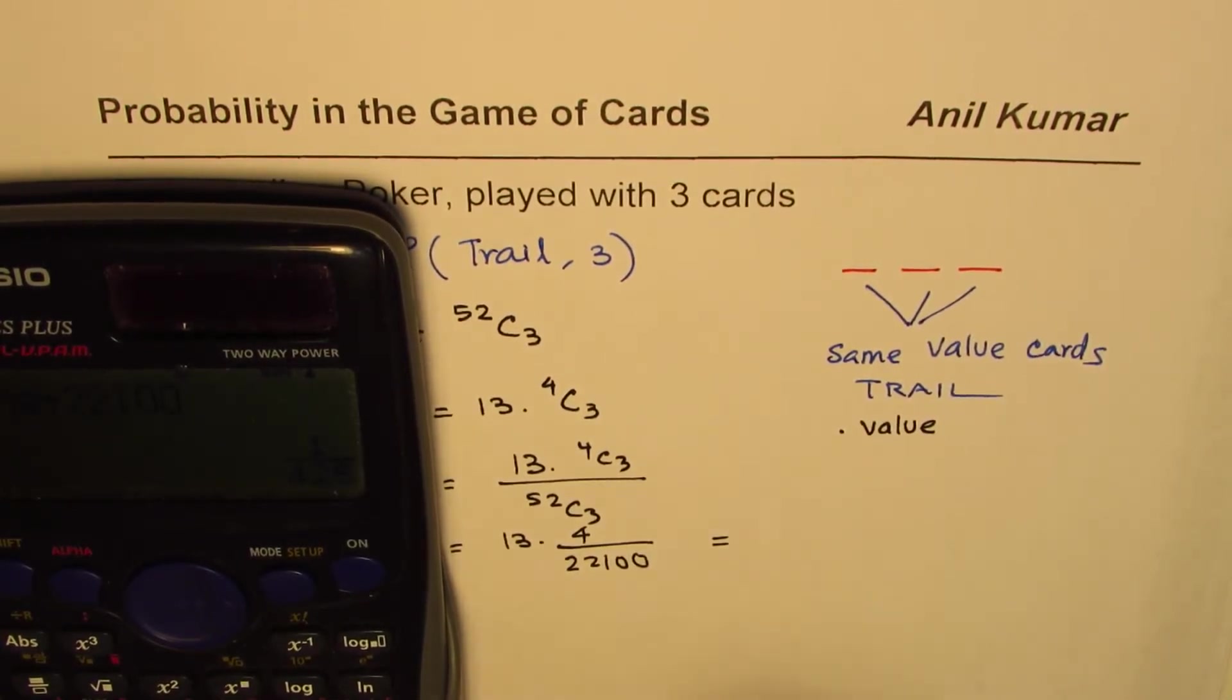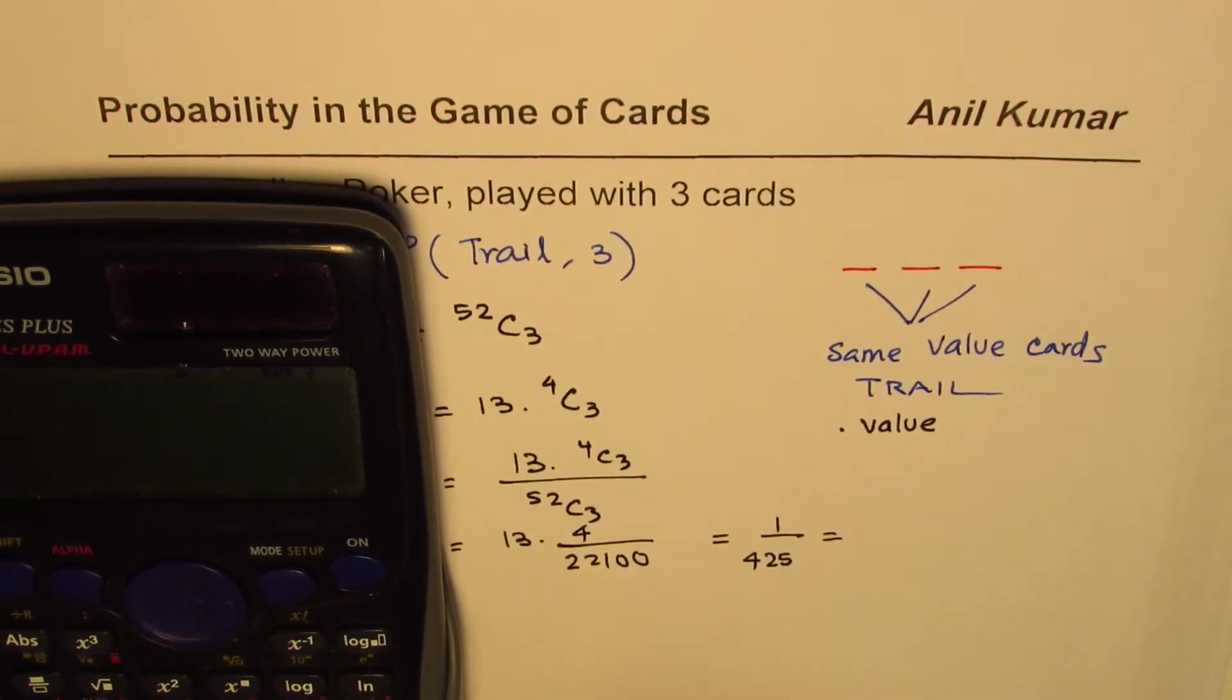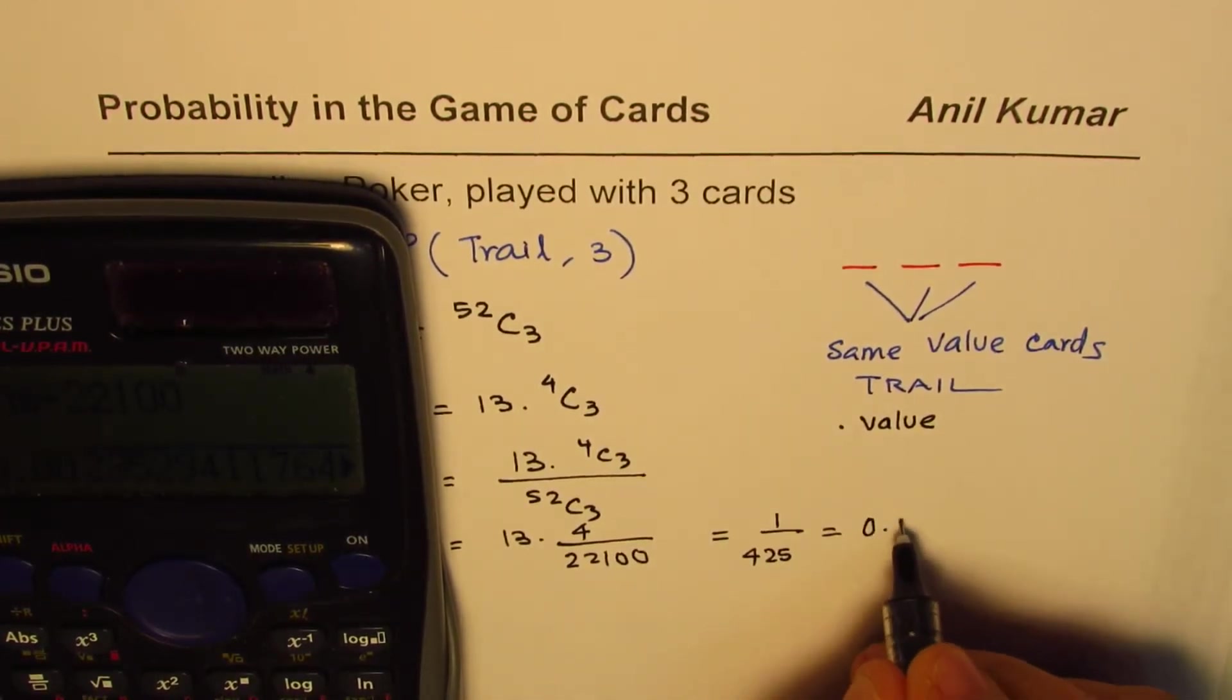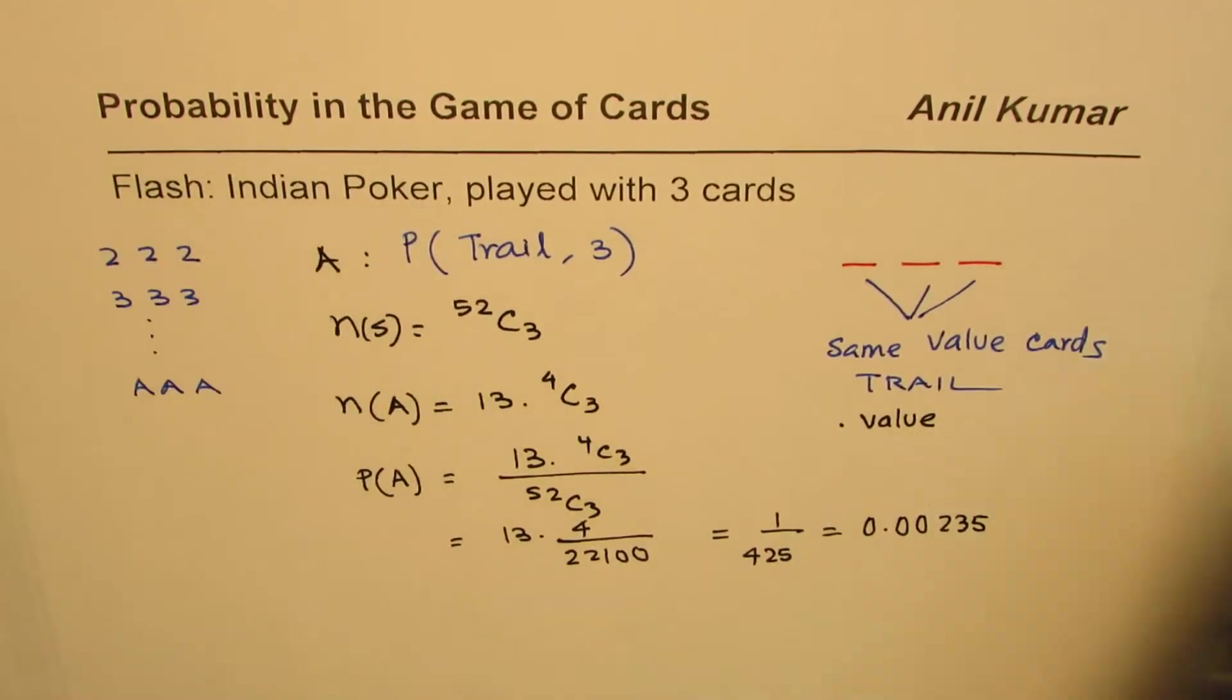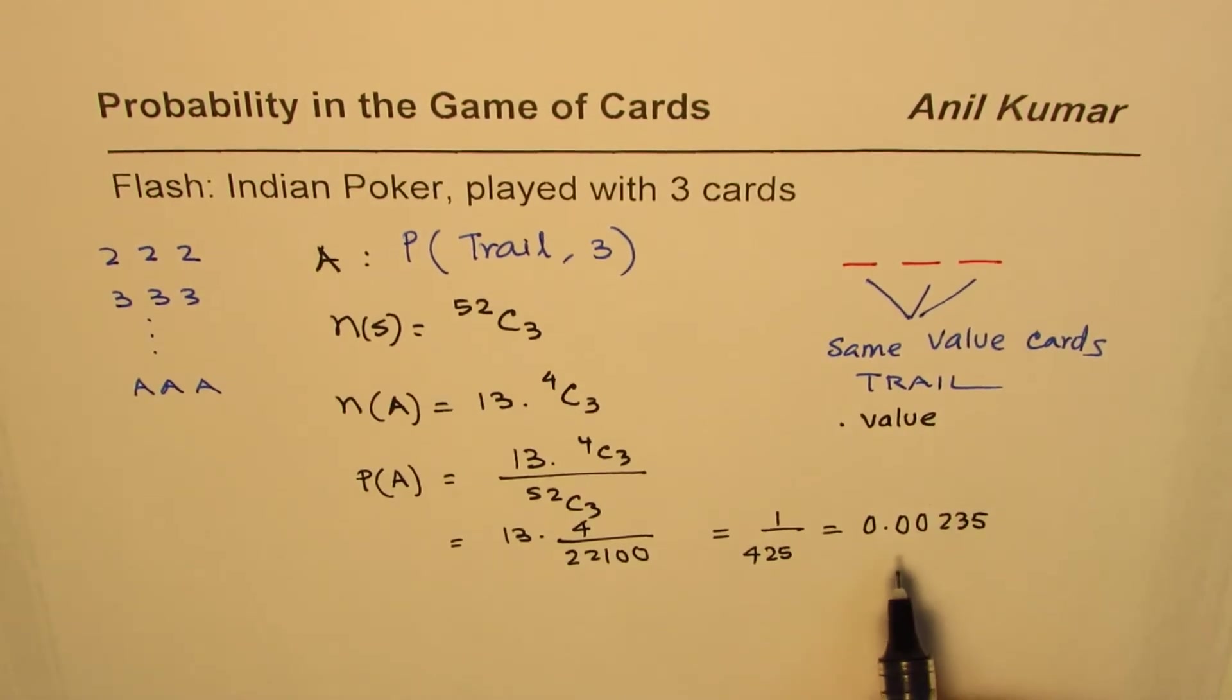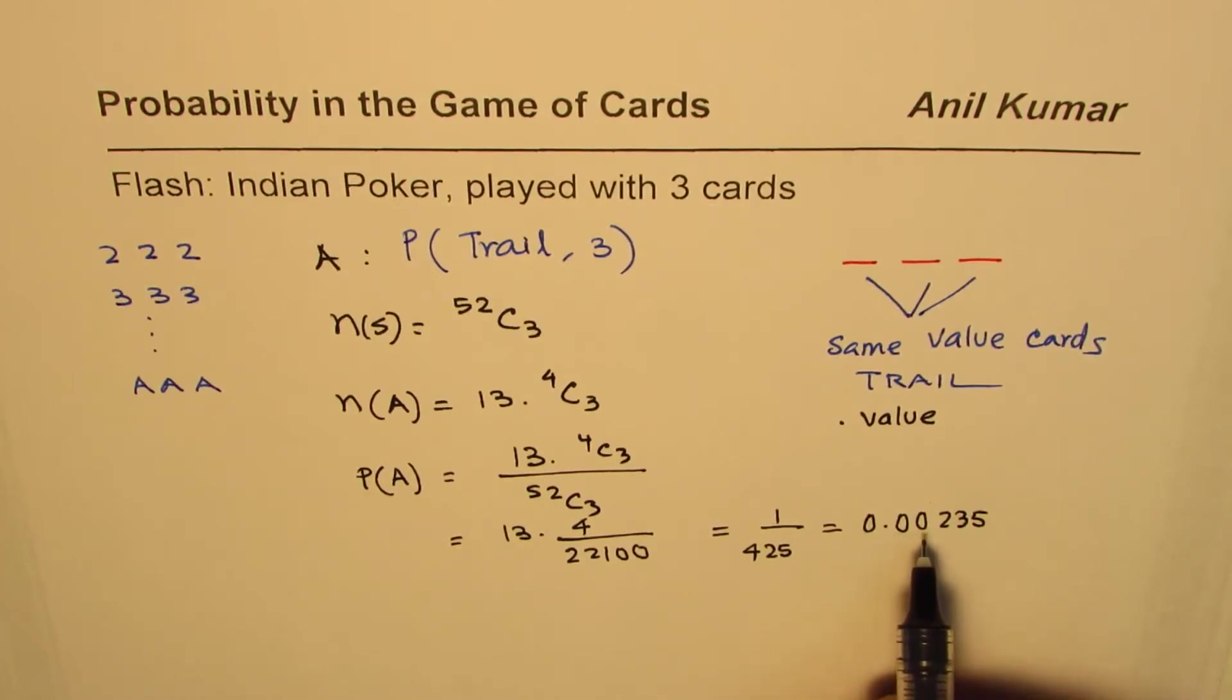So that gives you a number which is 1 over 425, and that is in decimals 0.00235. That is a very remote chance of getting a trail. That is why this is such a valued combination. The probability of getting a trail is 0.00235.